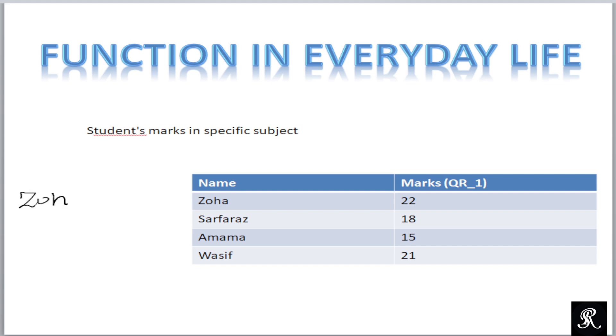For example, if we take student Zoha and the mark is in English, it means that this is the relation between Zoha and her marks in different subjects. If you have other subjects it would be a relation. For a relation to be a function, you can see that each element of set A should be uniquely mapped with the element of B, and here it is uniquely mapped in different subjects. This is why it is a relation for Zoha and her different subjects.